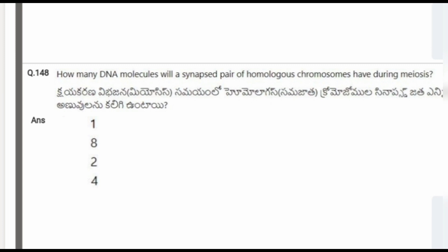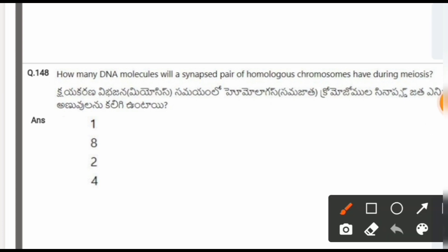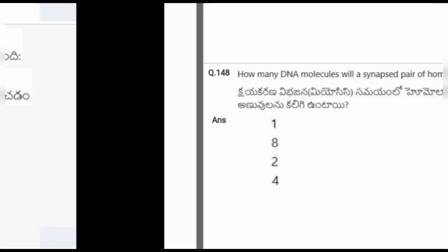Next question: How many DNA molecules will a synapsed pair of homologous chromosomes have during meiosis? The options are 1, 8, 2, 4. The correct option is 4.